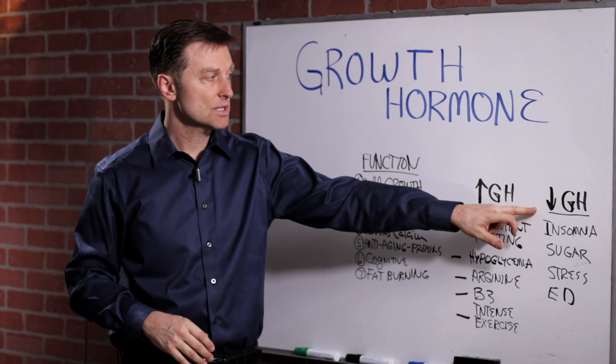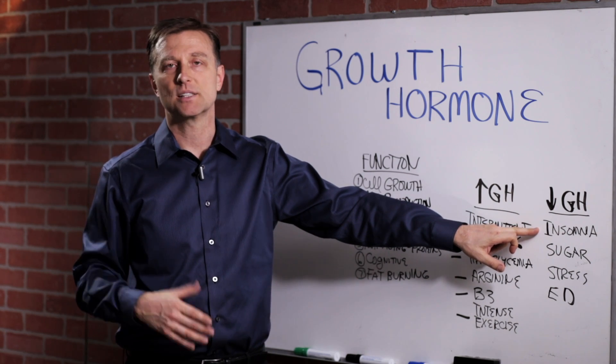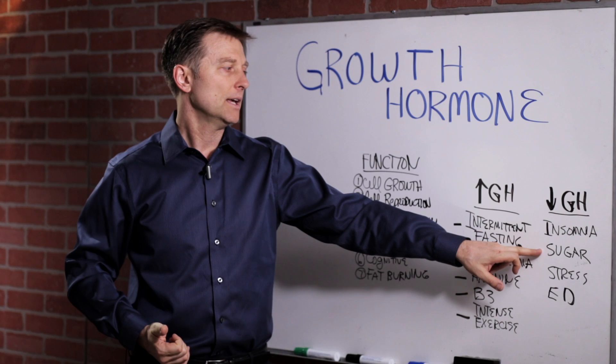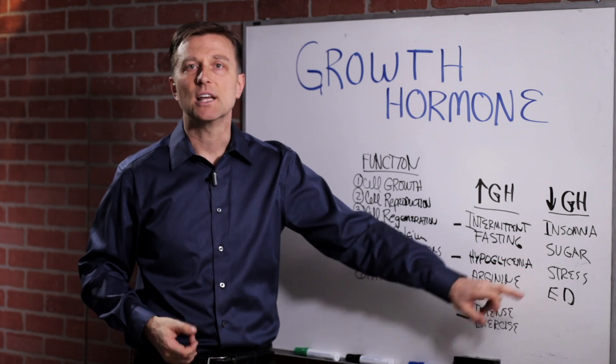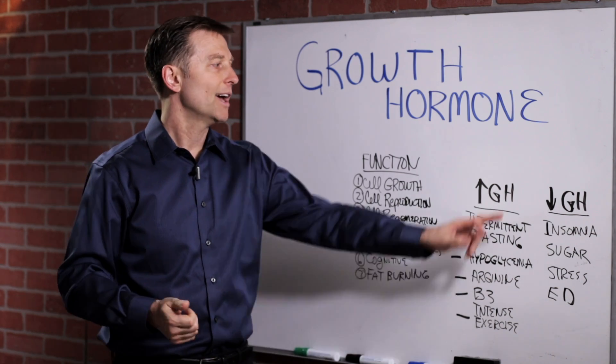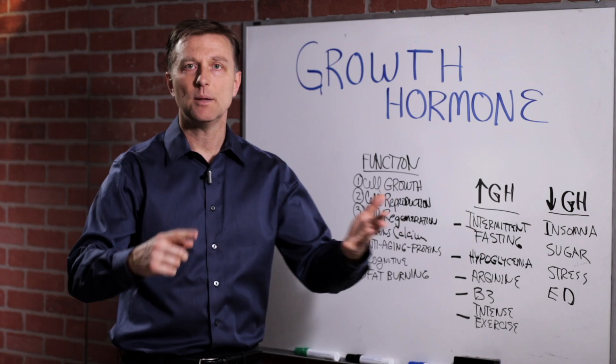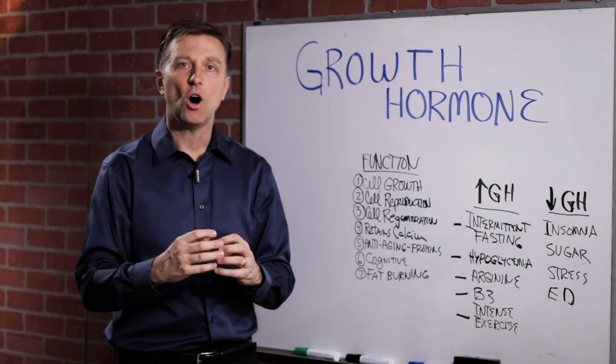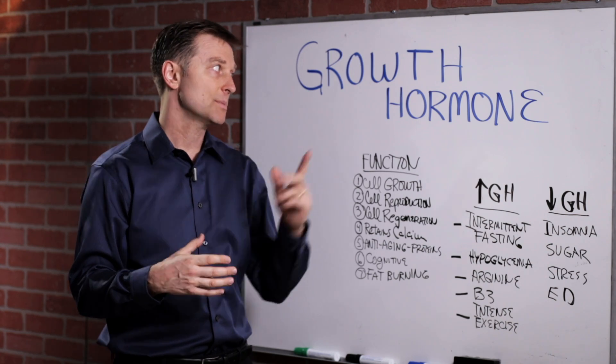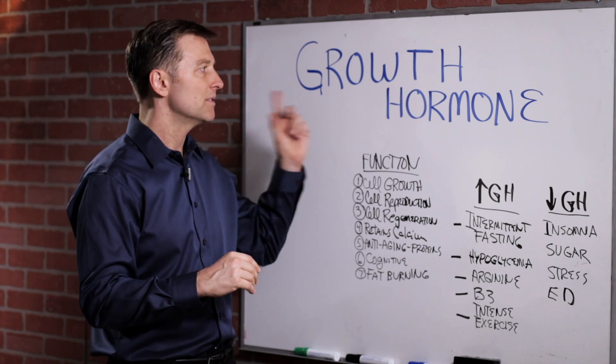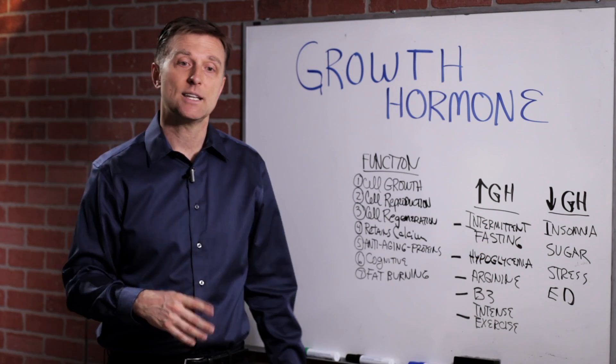Now, things that decrease growth hormone would be insomnia, not sleeping, sleep deprivation. Consuming sugar and hidden sugar, stress and cortisol. Cortisol will worsen growth hormone. And then endocrine disruptors, that would be the pesticides and herbicides, insecticides. All those interfere with hormones, and also especially the growth hormone. So I just wanted to touch base on this very vital hormone. So go ahead and apply this information and put your comments below.